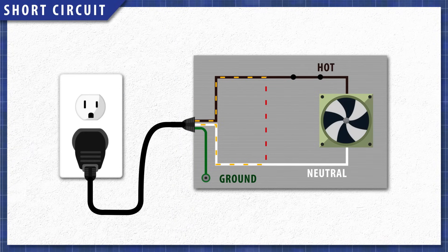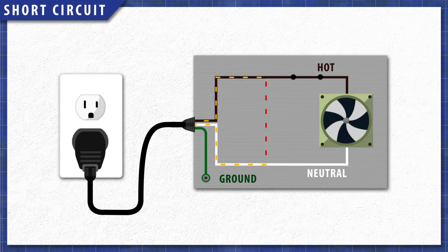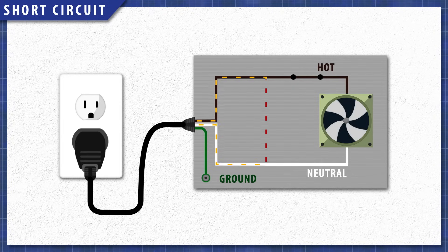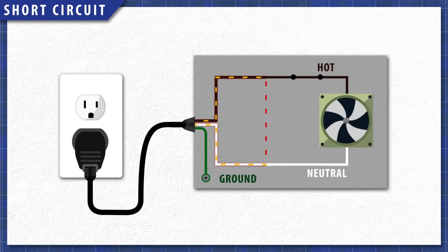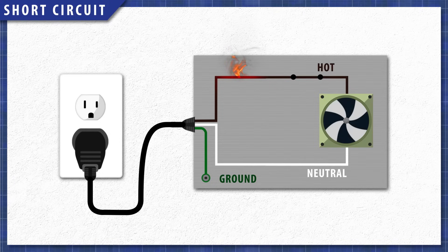Short circuits are created when the hot and neutral wires touch, and the circuit is completed before the load. In this case, the current no longer flows through the entire circuit, and with no resistance, the current rises. Without any protection, this increased current will cause the wires to heat up, burn out, and will start an electrical fire.